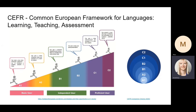In 2020, the companion volume was published and the approach is slightly different, as you can see here on the right. The levels here are defined through can-do descriptors, and so is the feedback that we provide to the students who take the test.